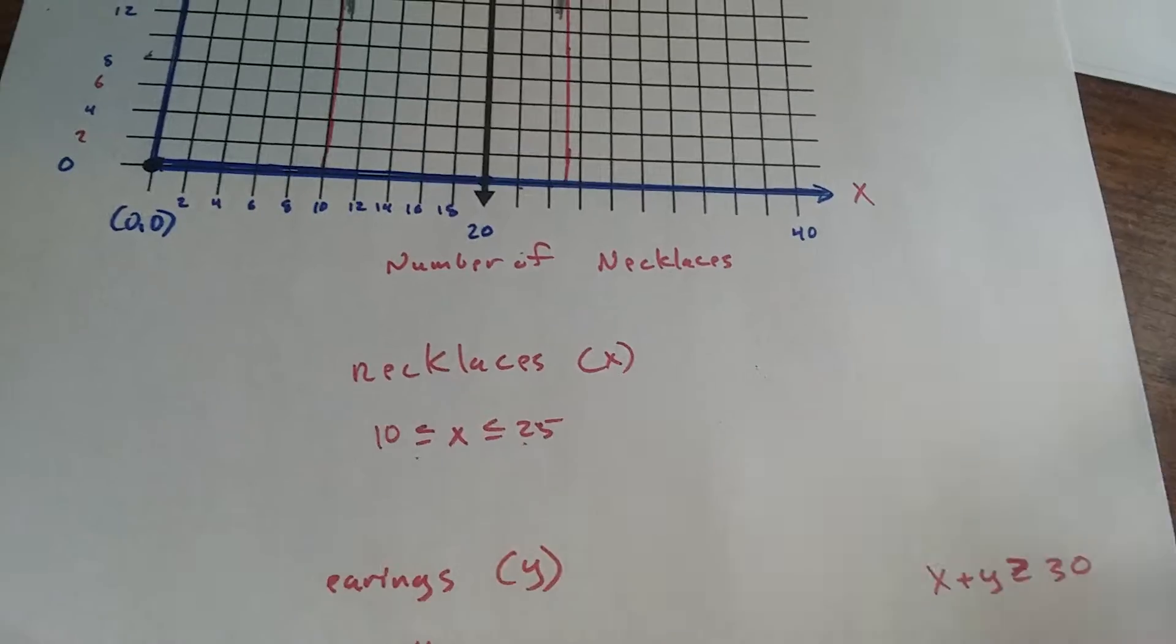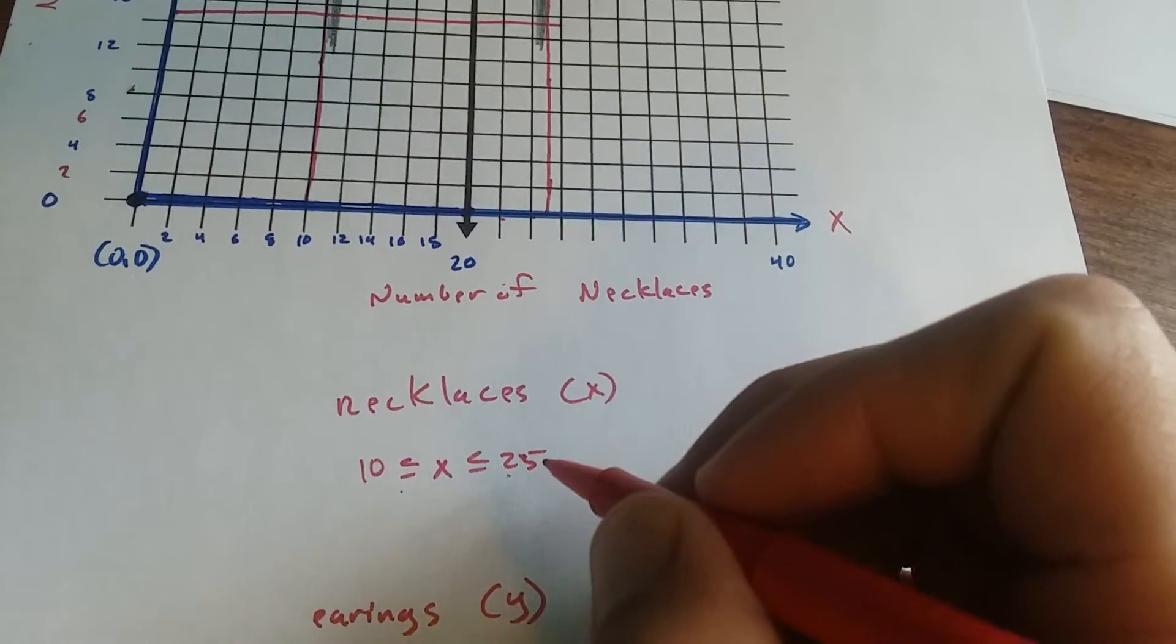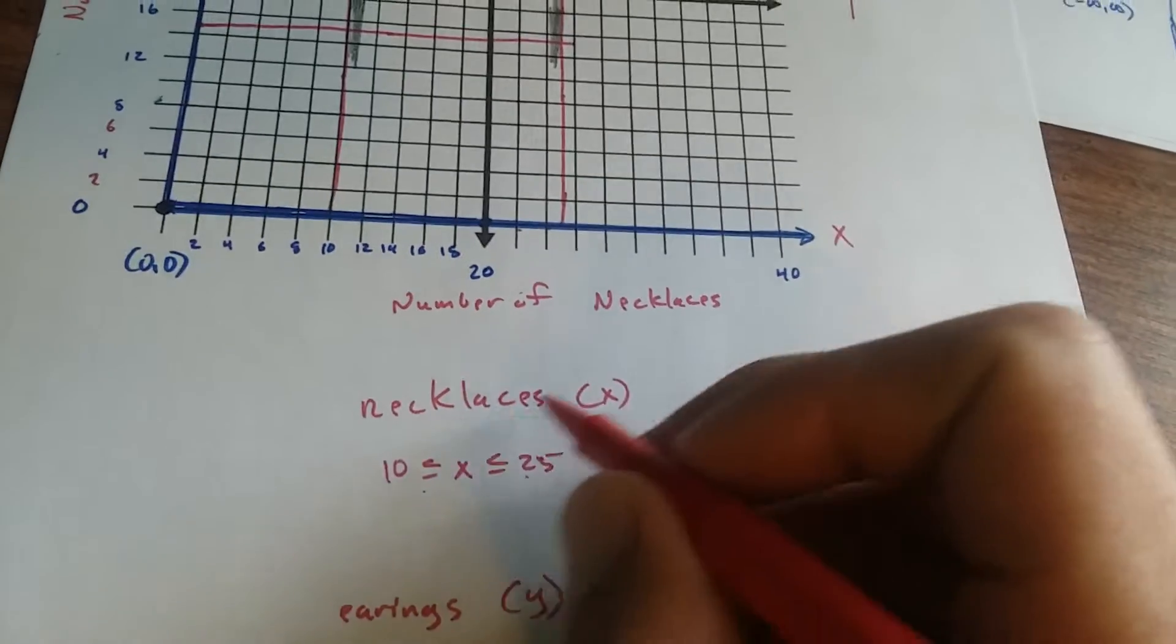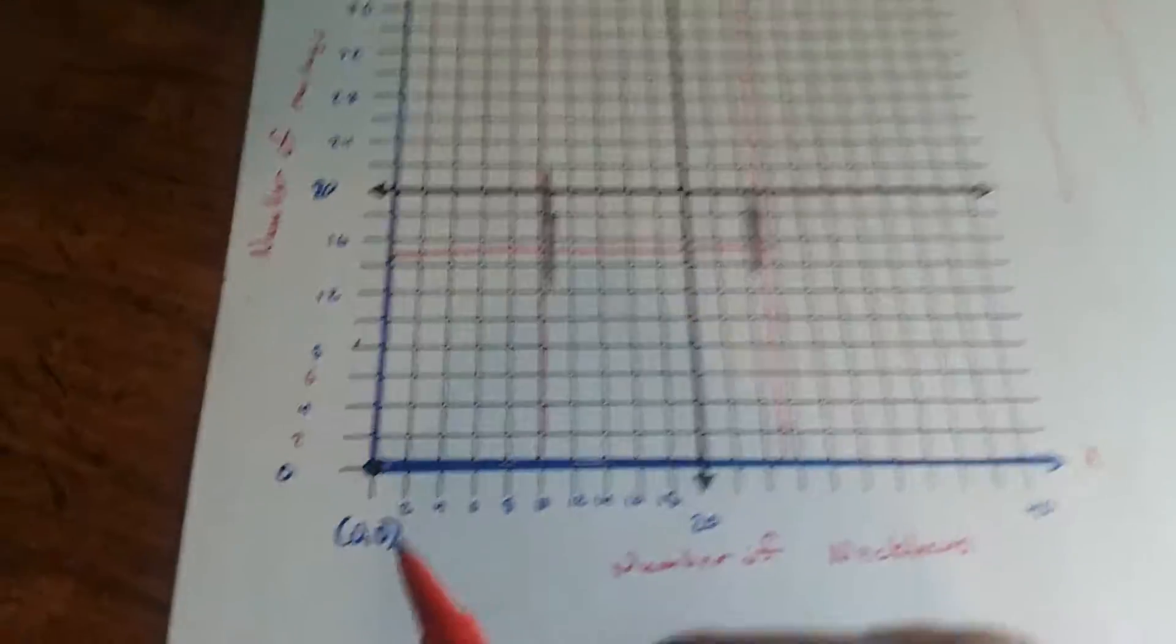So, the necklaces, remember, she has to have at least 10, but no more than 25. So necklaces are X, so X has got to be between 10 and 25. So I've made this coordinate plane.